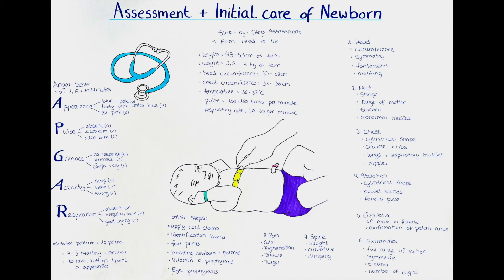Proceeding distally we reach the abdomen, where we again check for a cylindrical shape and evaluate bowel sounds. A flattened abdomen can indicate a diaphragmatic hernia. After the abdomen we examine the male or female genitals and confirm that the anus is patent.